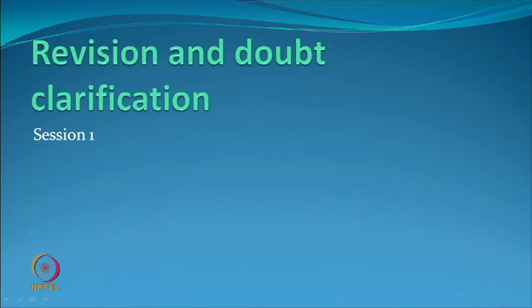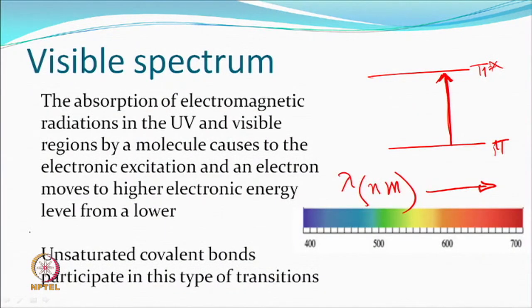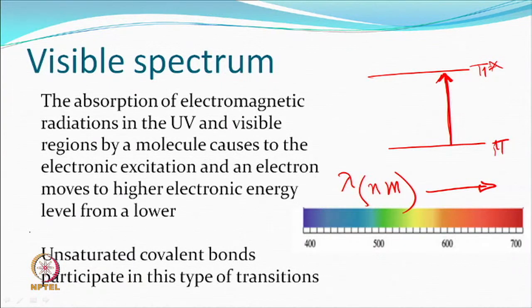We begin with the revision session today, also going through some points which were raised. One thing which was raised is how an auxochrome works and why does anything change. Whenever radiation falls on any material, depending upon the energy of the radiation — gamma rays have more energy compared to the visible range — there is going to be some electronic transition.